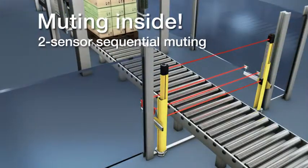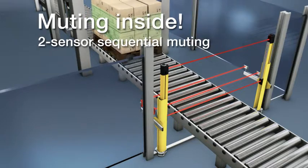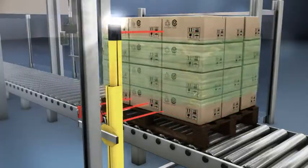Two-sensor sequential muting can also be configured, for shipments leaving the danger zone, especially when the space is tight.